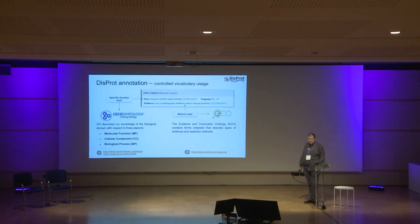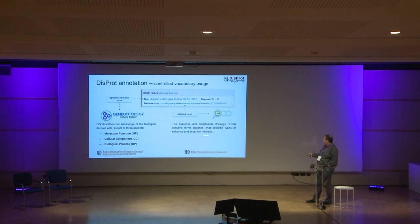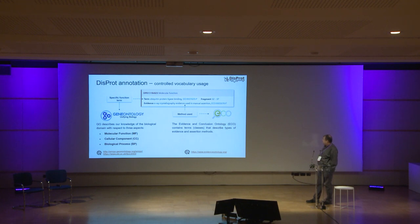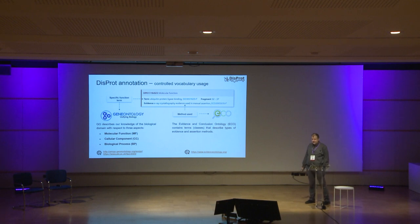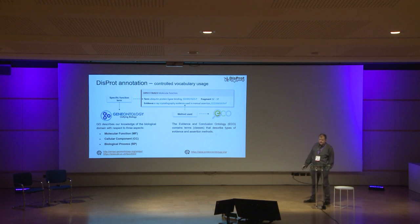Regarding controlled vocabularies, over the last two years we have been collaborating with ECO — the Evidence and Conclusion Ontology — to expand and encode the various types of experimental evidence available in DisProt. Several new terms were added. We have also been working with Gene Ontology to develop more specific functional terms relevant for disordered function, covering all three GO annotation aspects but mainly molecular functions, which are now propagated to various UniProt entries.